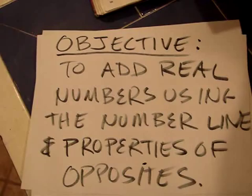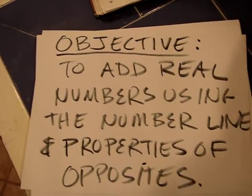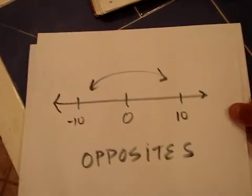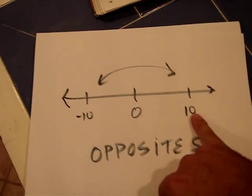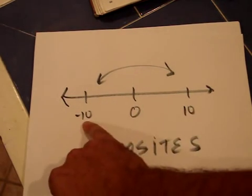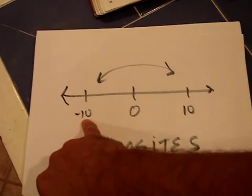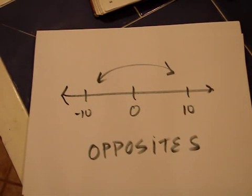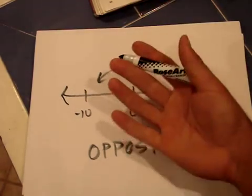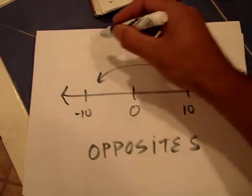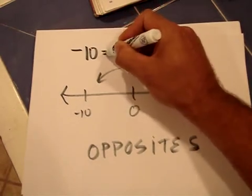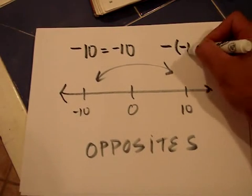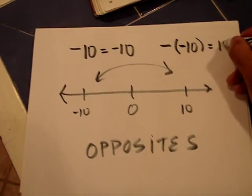Thinking back, you might be wondering what opposites are. Opposites are the number on the opposite side of the number line. For instance, the opposite of 10 would be negative 10. The negative sign means opposite, so the opposite of 10 is negative 10, and the opposite of negative 10 would be 10.